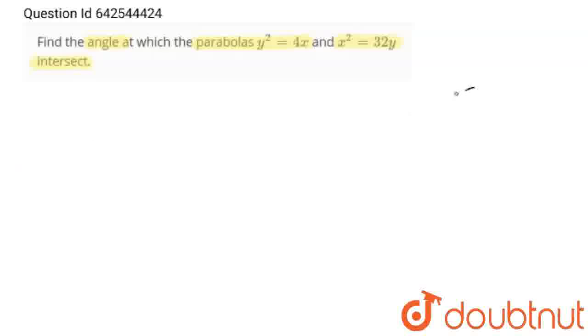Suppose this is our parabola y²=4x and this is our parabola x²=32y. So at this point, on both curves, we can draw tangents and angle between both tangents is angle between both curves.